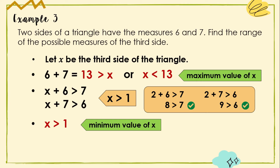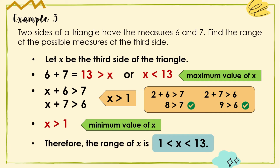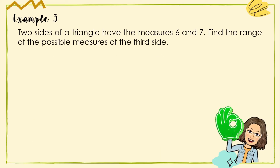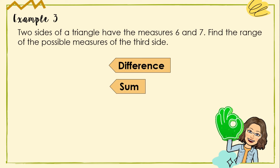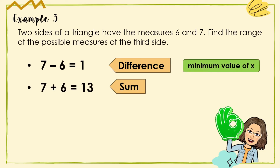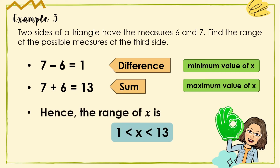Having the minimum and maximum values of X, the range of possible measures of the third side is: X is greater than 1 but less than 13. Here is an easier method: take the difference and the sum of the two given measures. The difference of 7 and 6 is 1 (minimum value), and their sum is 13 (maximum value). Hence, the range is: 1 < X < 13.